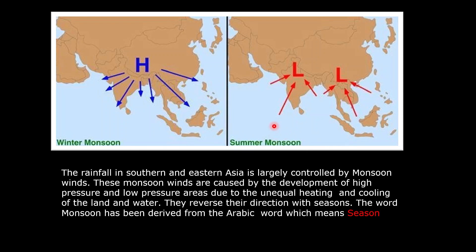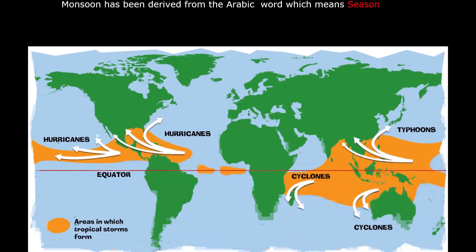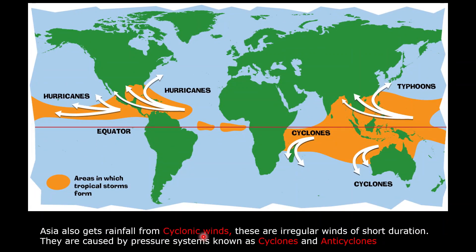During the summer, winds are moving from the sea to the land, while during the winters the winds move from the land towards the sea. The word monsoon comes from the Arabic word 'Mawsin', which means season. Asia also gets rainfall from cyclonic winds. Cyclonic winds are irregular winds of short duration and are mainly caused by pressure systems such as cyclones and anti-cyclones.